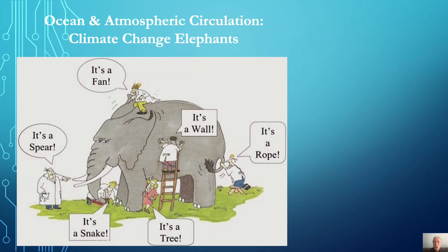Ocean and atmospheric circulation are the critical climate dynamics controlling sea ice, heat ventilation, and Arctic warming. But those dynamics are the elephants in the room rarely addressed by a mainstream media bent on pushing clickbait driven by climate crisis headlines.